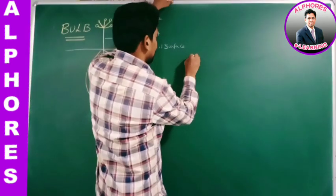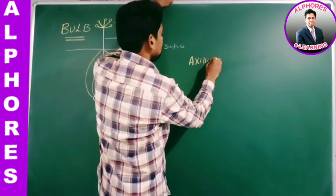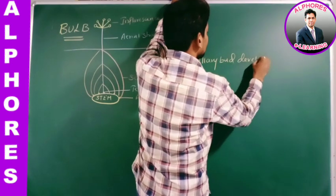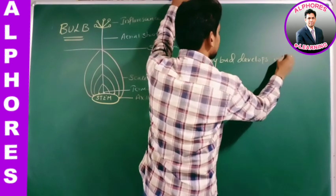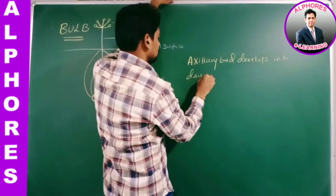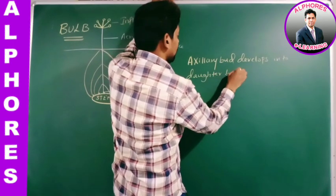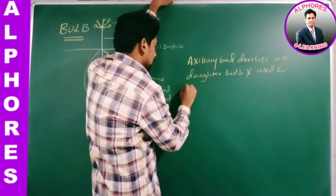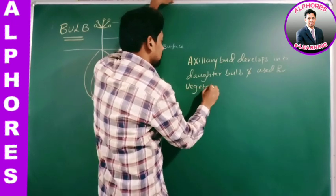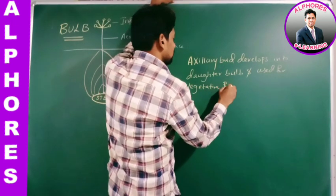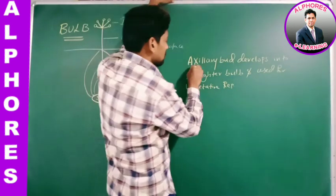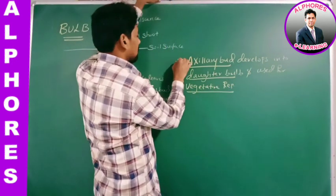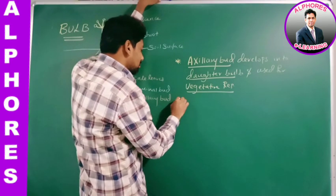Therefore, axillary bud develops into a daughter bulb and is used for vegetative propagation. What about the terminal bud? Terminal bud develops into an aerial shoot with inflorescence, which is called a scape.